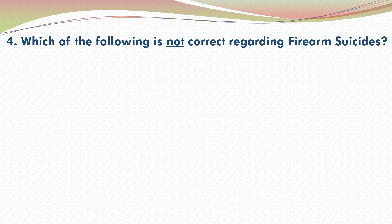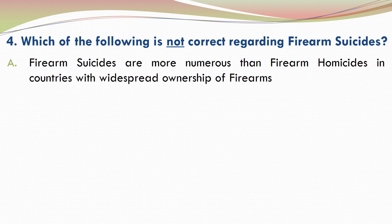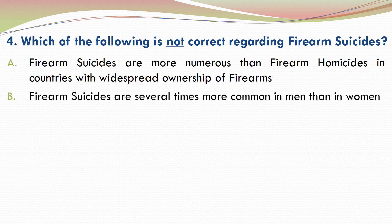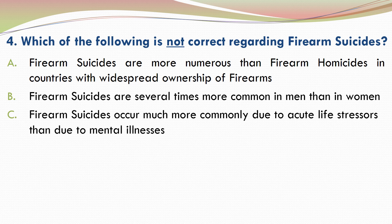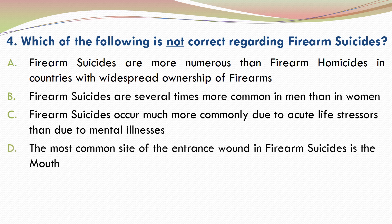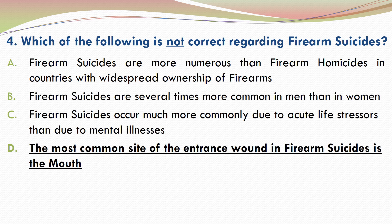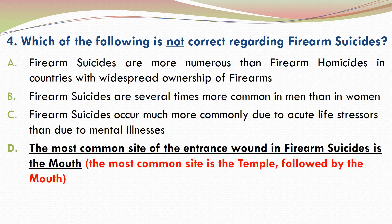Question 4. Which of the following is not correct regarding firearm suicides? There are four options; please go through them and make your selection. If you want, you can pause. The correct answer is D — D is the statement which is not correct.